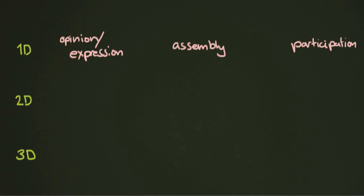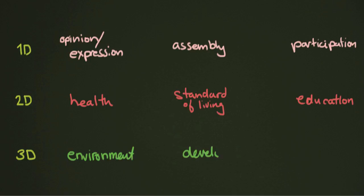On the second dimension level, we're thinking about things like health, thinking about standard of living, so right to an adequate standard of living, and we also have things like education. And down at the bottom, we have our third dimension rights, which we just talked about. So, you should have them fresh in your mind. Environment, development, and peace.